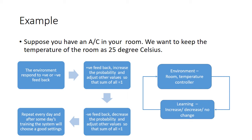If the response is bad, the automaton will penalize the selected setting by reducing the probability corresponding to the bad setting and increase all other probability values in order to keep the sum equal to 1. This process is repeated each day until the good selection has a high probability value and all bad choices have a value near to 0.